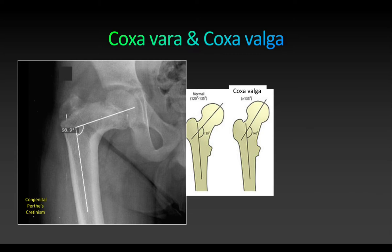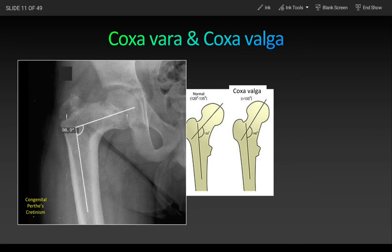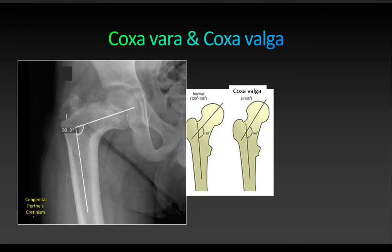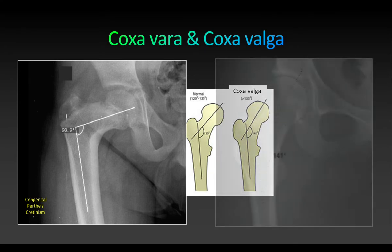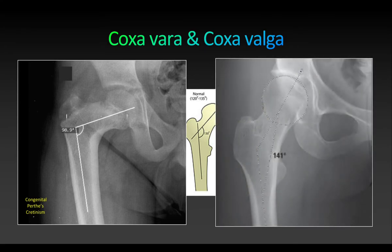Coxa valga is also usually seen as a congenital anomaly, and because of this angulation the joint is more prone to dislocation. Hence it is seen in CDH, that is congenital dislocation of hip.